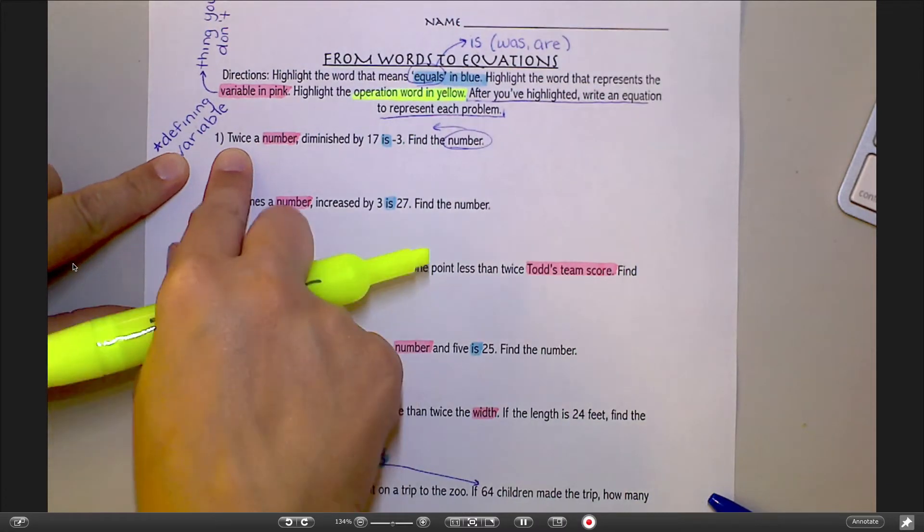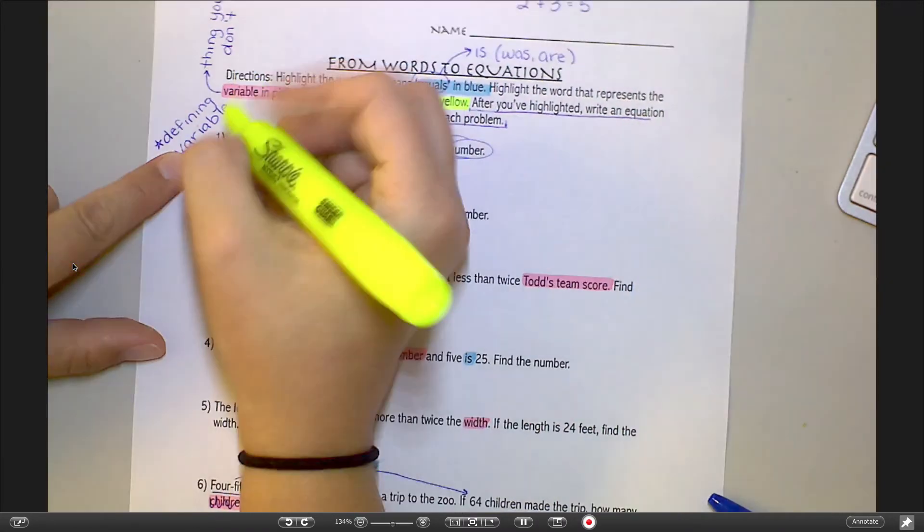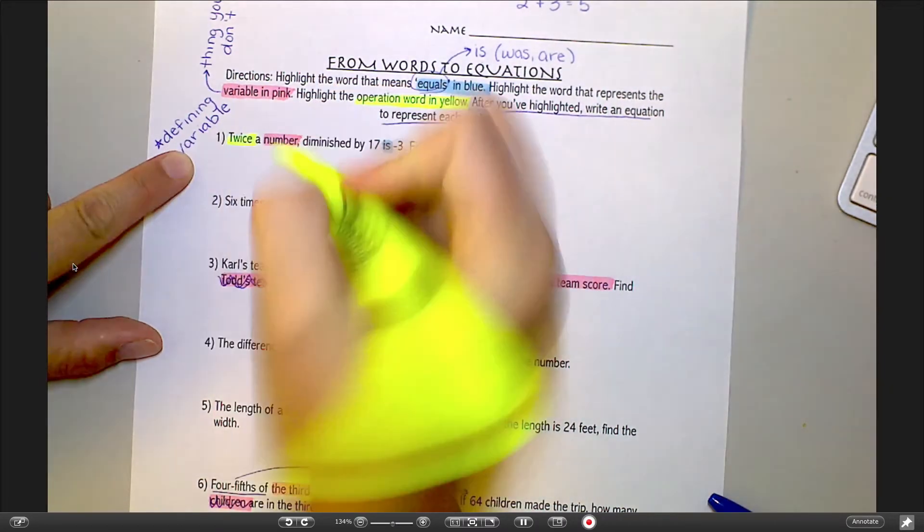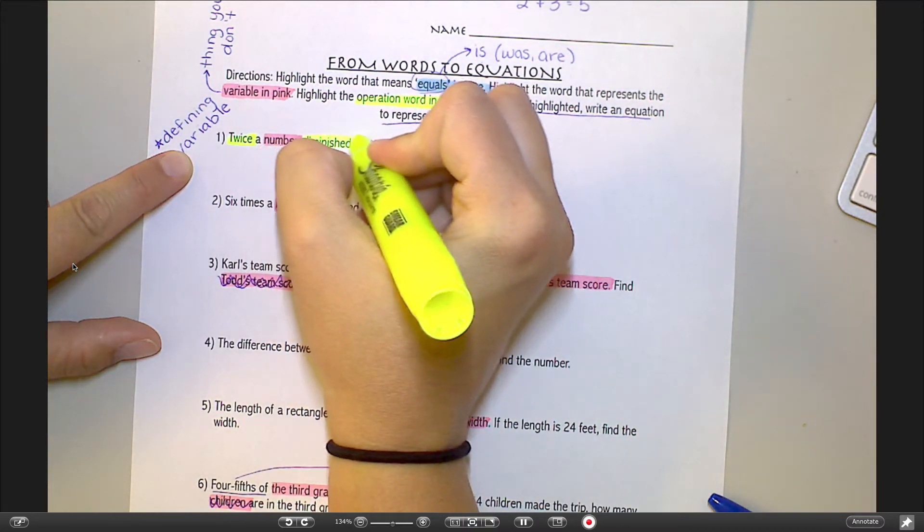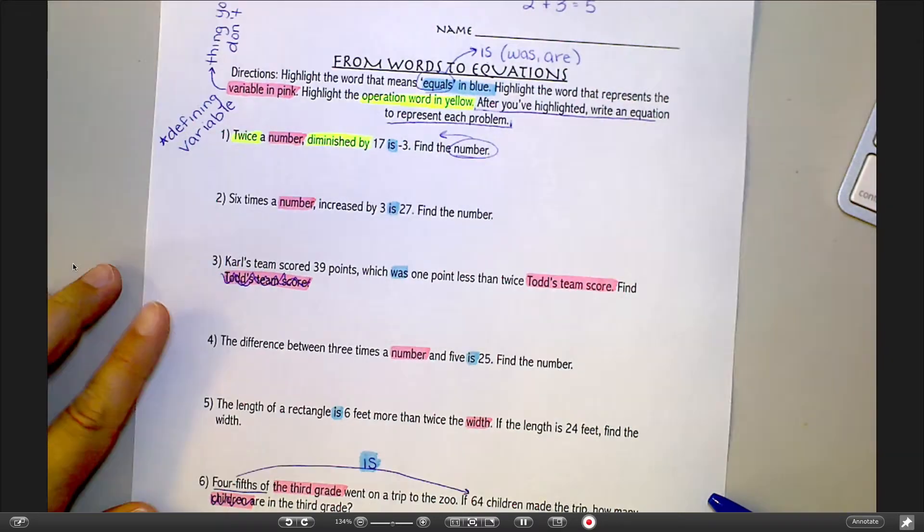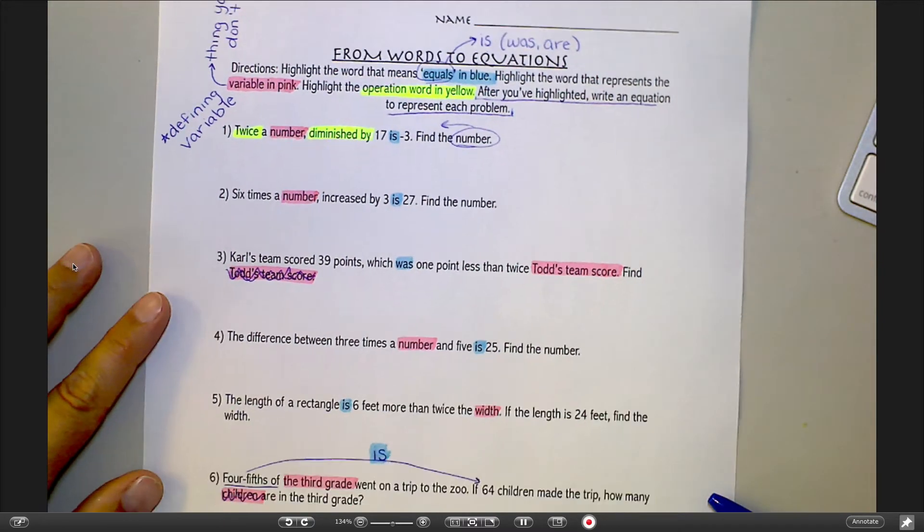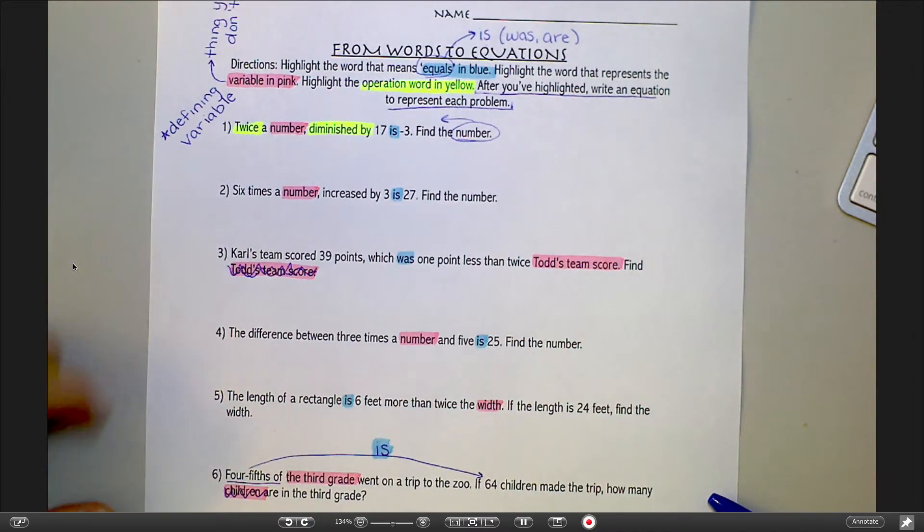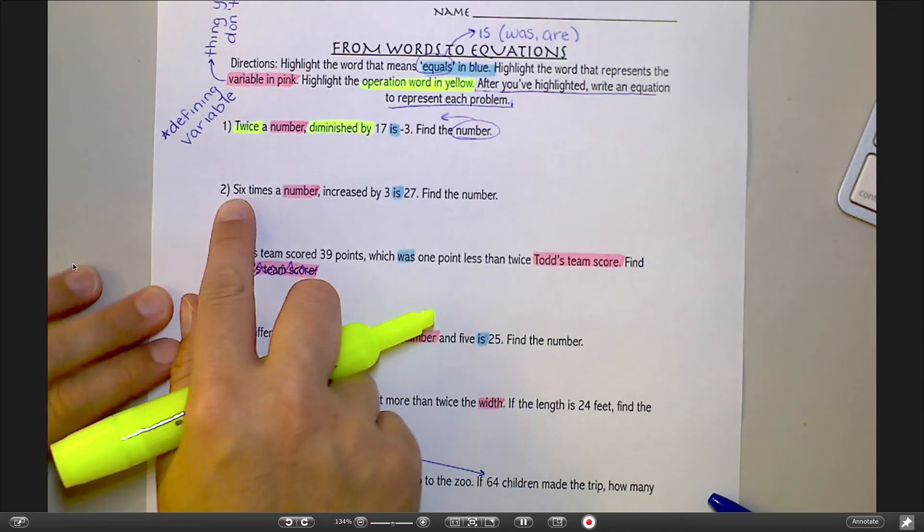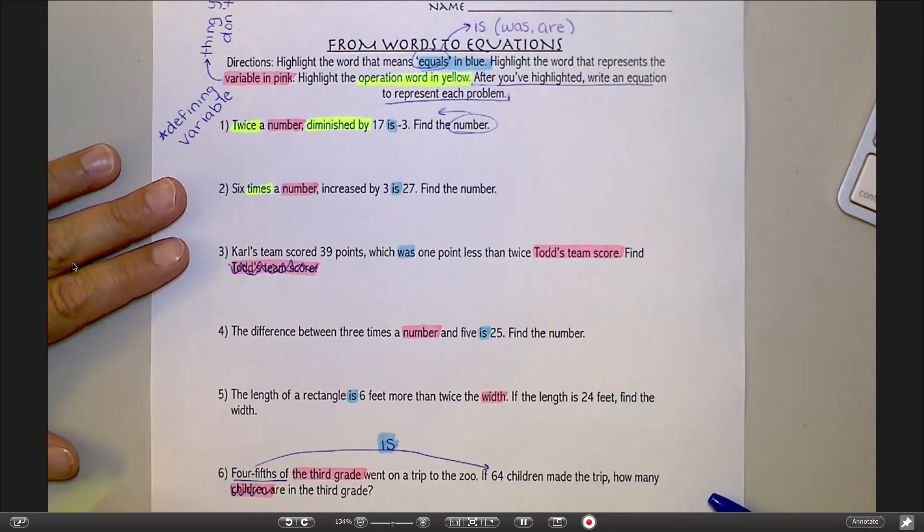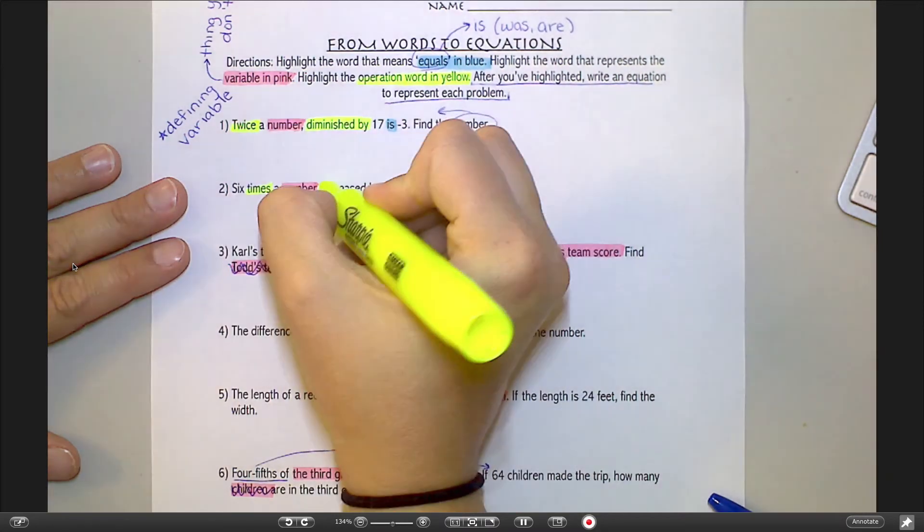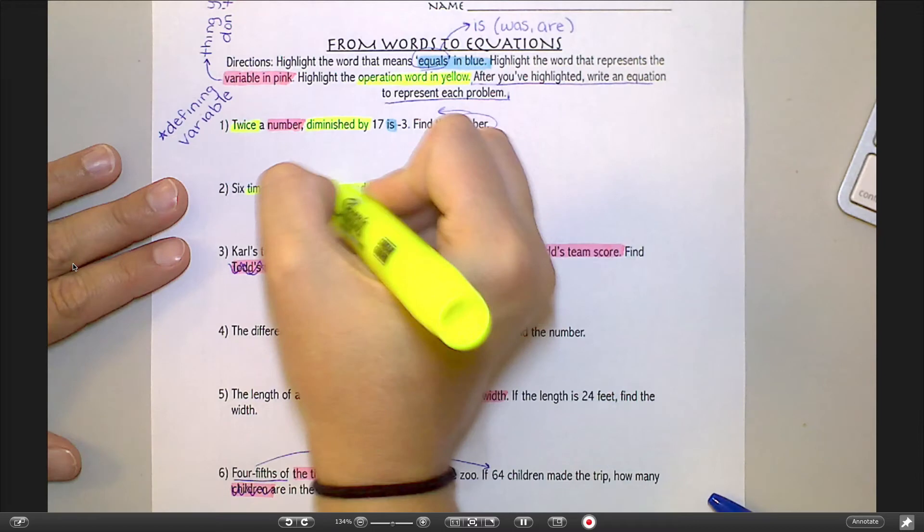So for example, in this first one, I'm looking for any number that implies either addition, subtraction, multiplication, or division. So twice, twice means to multiply something by two. So that's an operation number. Diminished by, that's a tricky one. Not very many people come up with diminished by. So if you haven't added that to your table, go on and do it now. Number two, six times, times is an operation word. Increased by, that's an operation word, means to add.